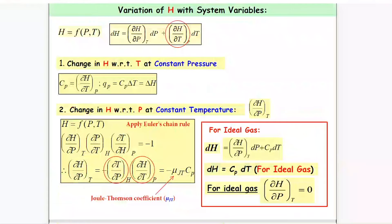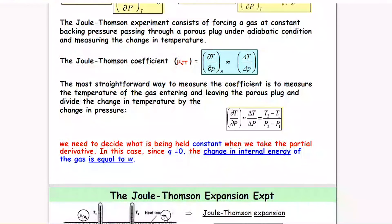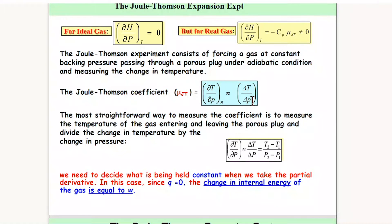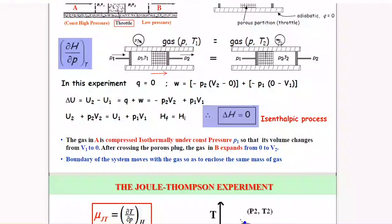The Joule-Thompson effect is the monitoring of the change in temperature brought about by a drop in pressure when a gas is allowed to pass from a high pressure to a low pressure zone. The condition is adiabatic, so we have an adiabatic expansion. Whether we have a drop or a rise in temperature is decided by the coefficient mu_JT, the Joule-Thompson coefficient.